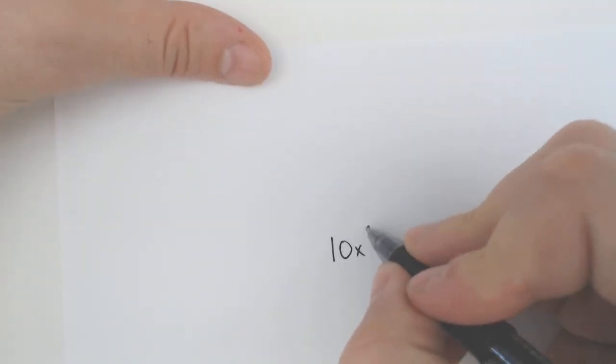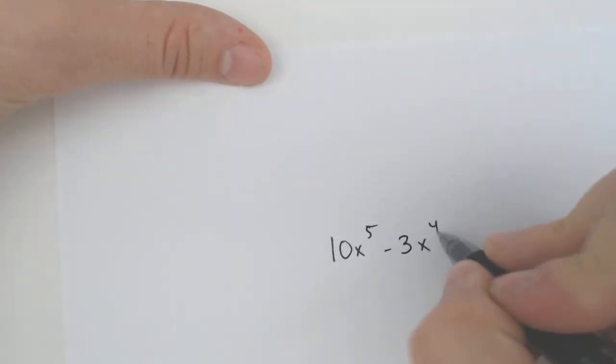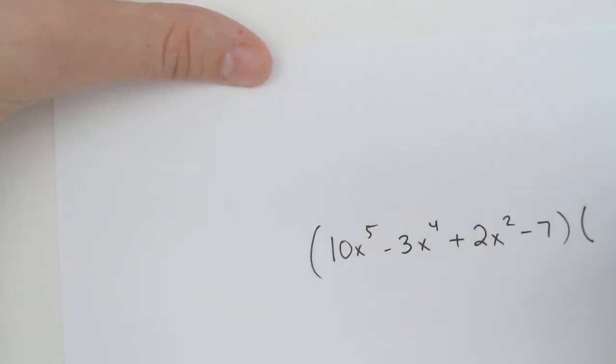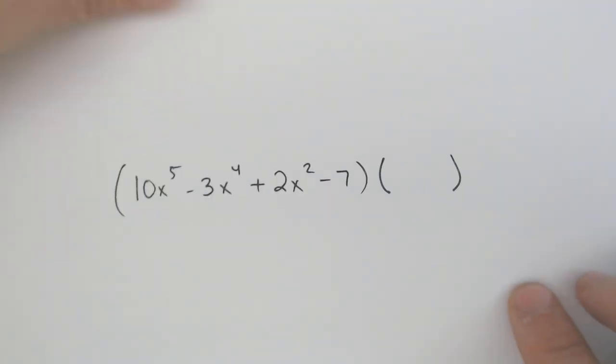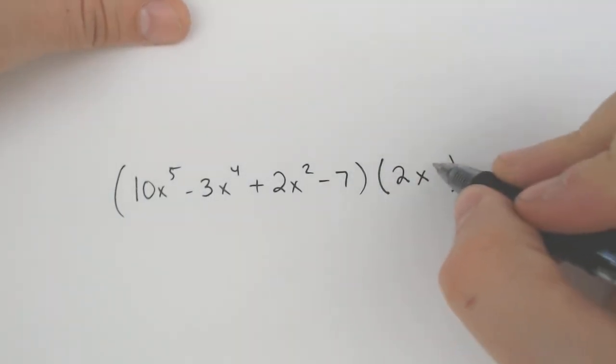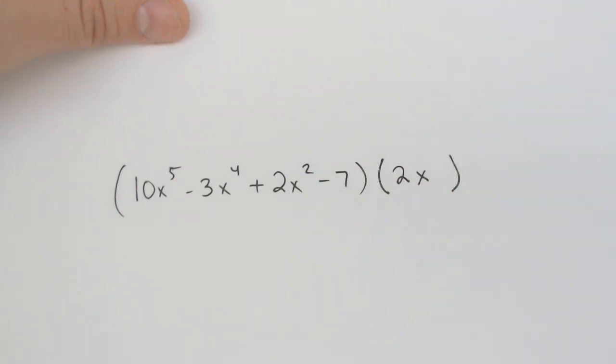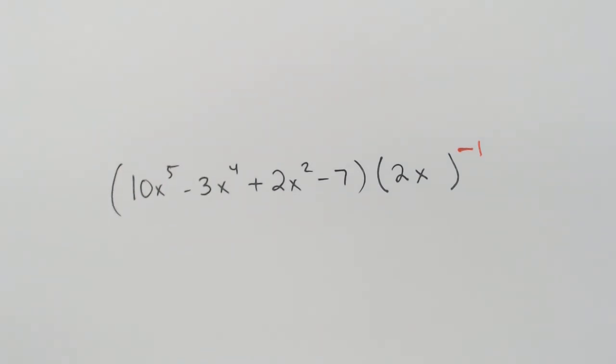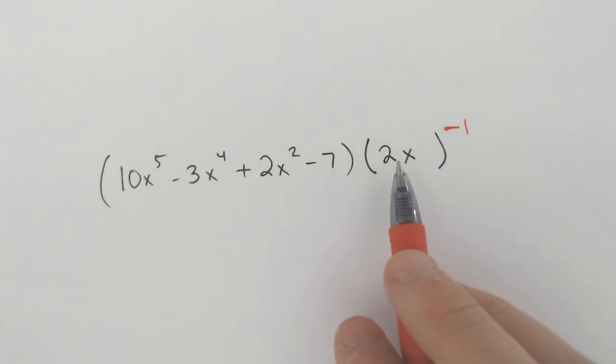And it will also be the very last way that you could be presented with this. So let's say you got 10x to the 5th minus 3x to the 4th plus 2x squared minus 7. And then right next to it, let's say that we had 2x. We'll just do 2x. And then raised to the negative 1 power.